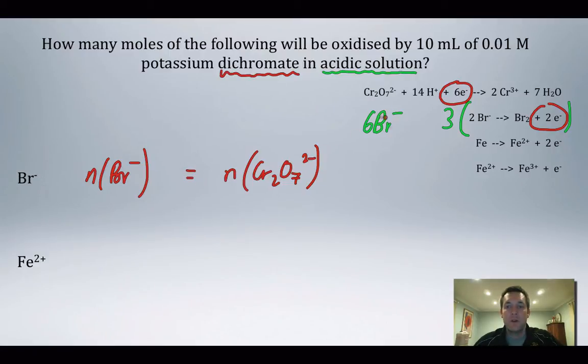The number of moles of bromide ions is six. The number of moles of dichromate ions is one. So the number of moles of bromide is six times as great as the number of moles of dichromate. The number of moles of dichromate is C times V, which is 0.01 times 0.01, that's 0.0001 moles. So the number of moles of bromide ions that I can oxidize using this amount of dichromate is 0.0006 moles.